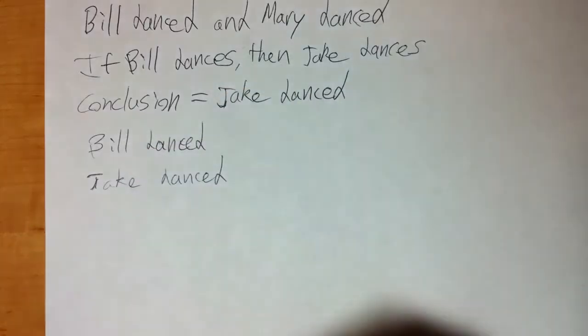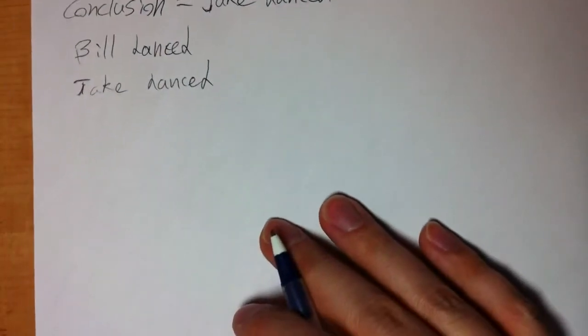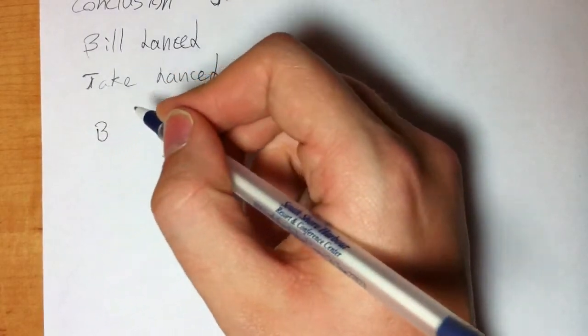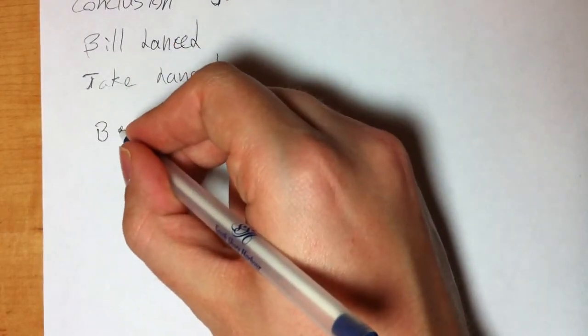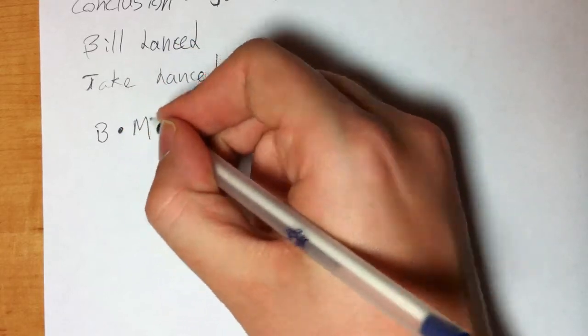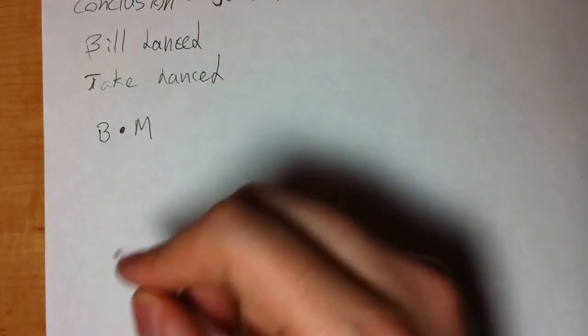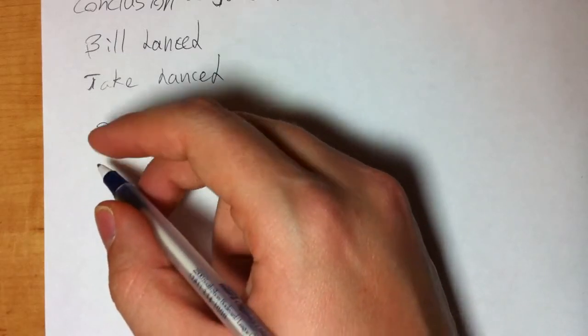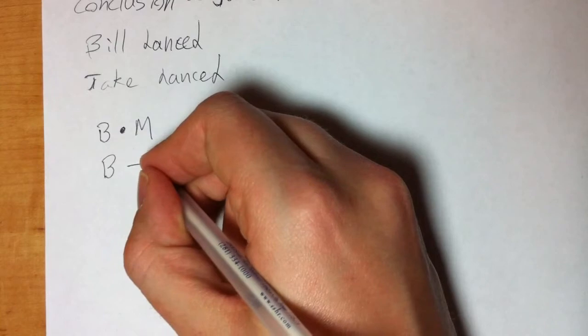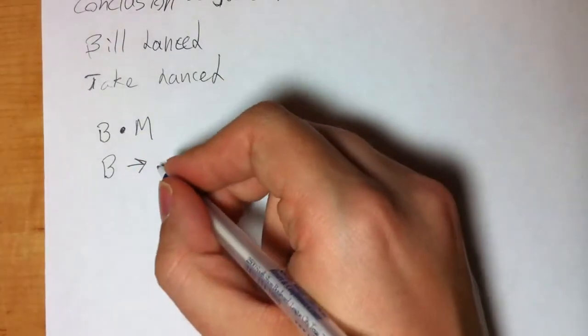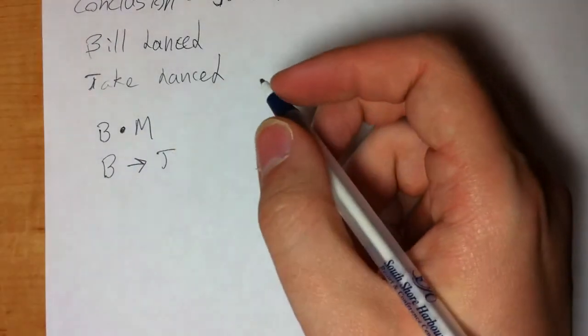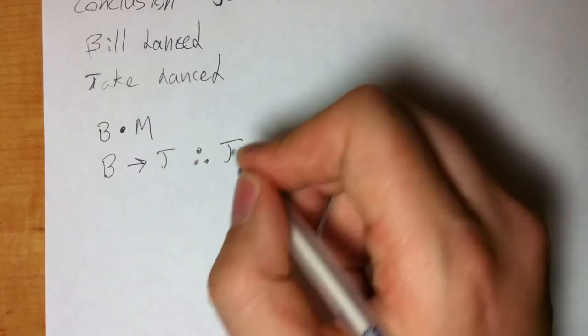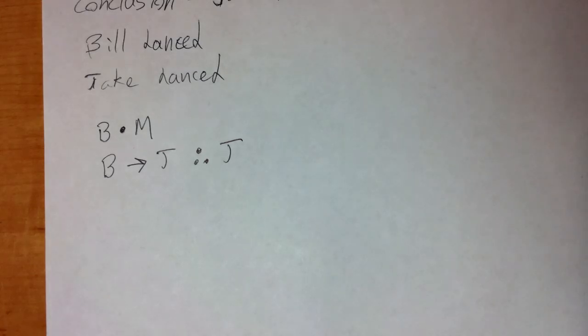Except switched into logical form. Instead of Bill dances and Mary dances spelled out in English, we just maybe use capital B, instead of 'and' we symbolize the dot for M, Mary dances. Instead of 'if Bill dances then Jake dances' we have B arrow J, and our conclusion would just be symbolized with Jake dancing, J.